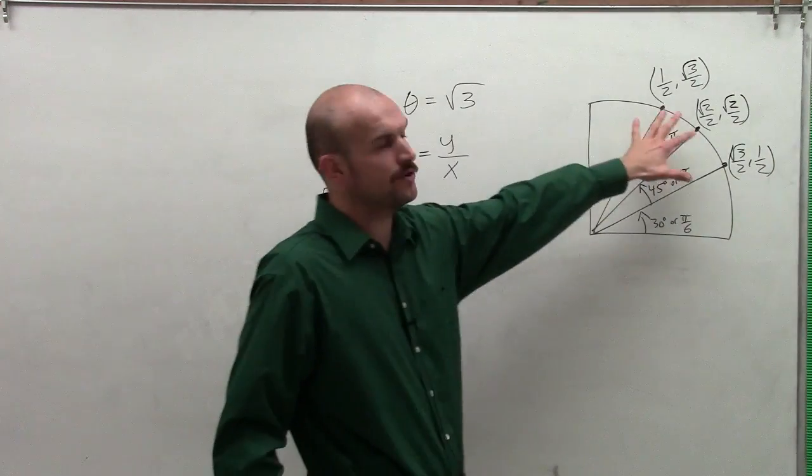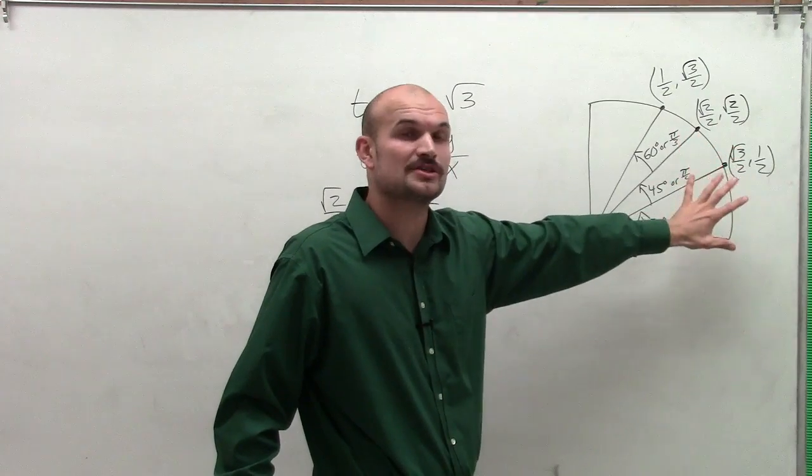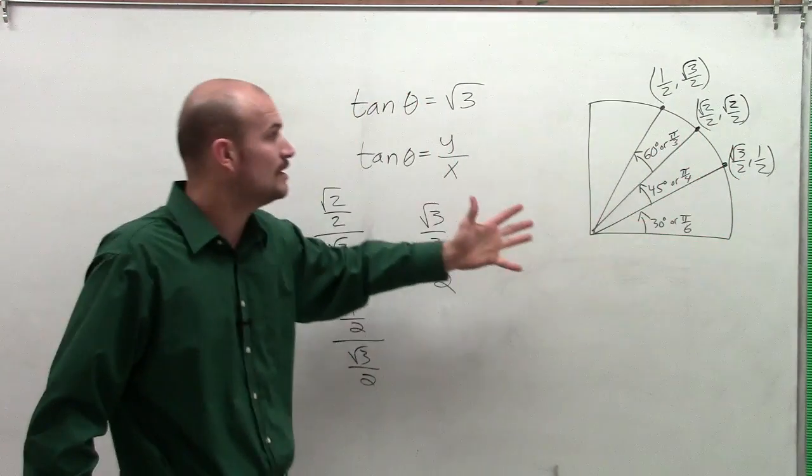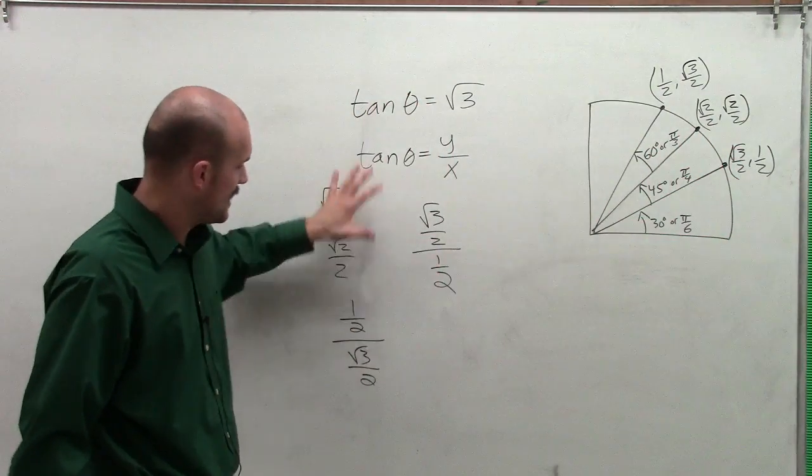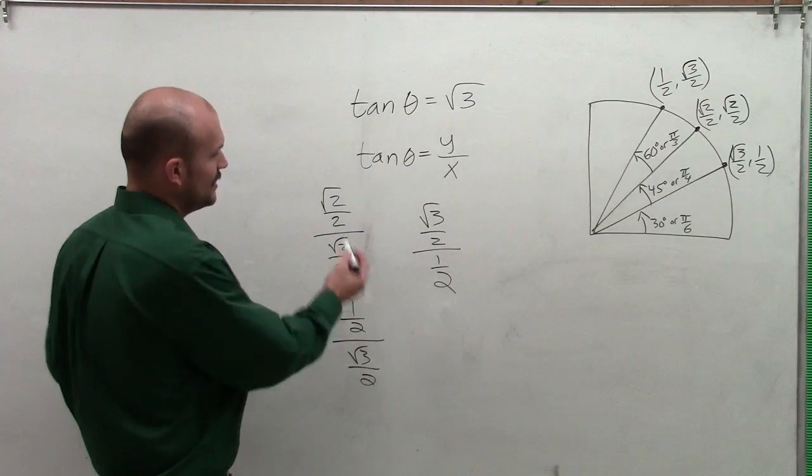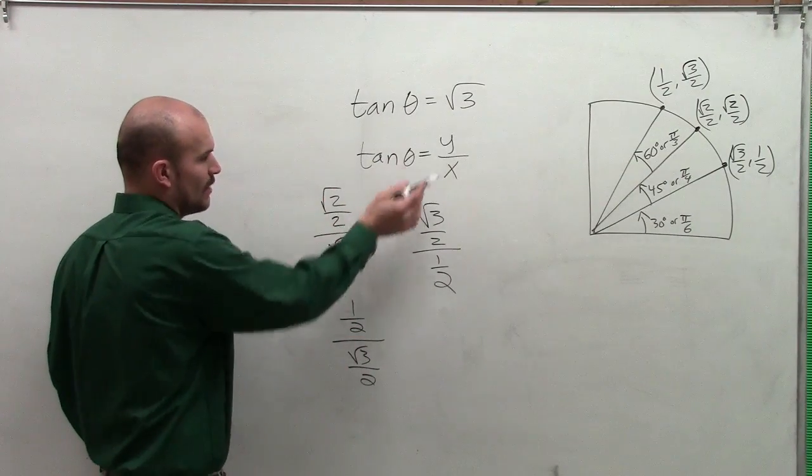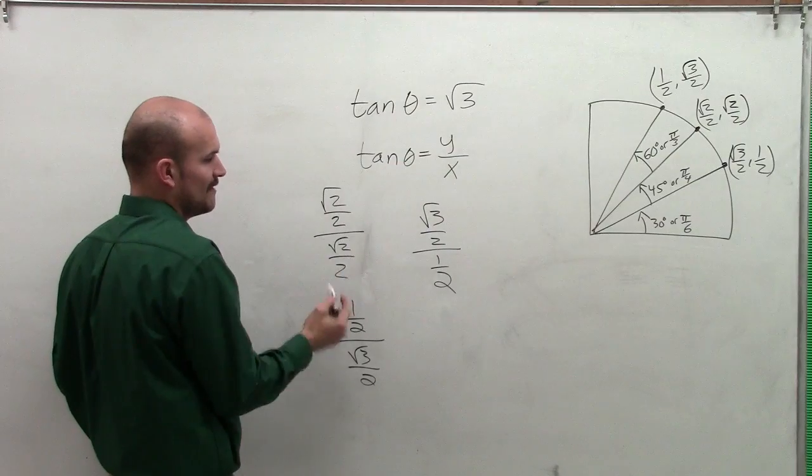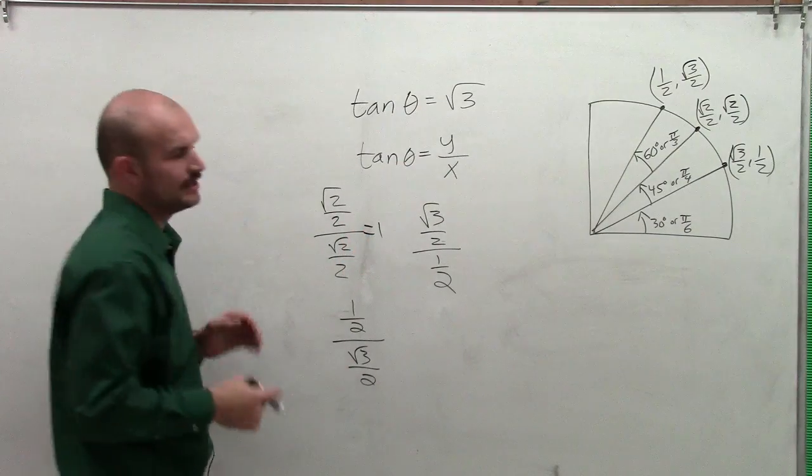And what I did is I just took the y and the x coordinate of each of my corner points in the unit circle in the first quadrant and I put them here. Well, here once we notice, when you take your y over x for this coordinate for 45 degrees, that quickly goes to 1.